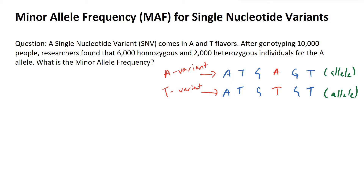The very first thing you do to solve this problem is to list out all the genotypes that we can have. So we can have AA, AT, and TT variants. These are the three possible genotypes.